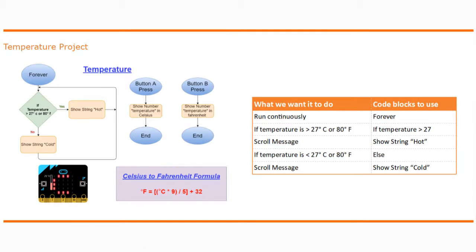For our temperature project, our main objective is to detect the amount of temperature in the room where the microbit is located. If the temperature is greater than 27 degrees Celsius or 80 degrees Fahrenheit, then we're going to have the text "hot" scroll across the screen. If the temperature is equal to 27 degrees Celsius or below, we're going to show the text "cold". We'll also be able to display the current temperature by pressing the A button, and when using the B button, we'll use our Celsius to Fahrenheit formula to show that temperature in Fahrenheit.